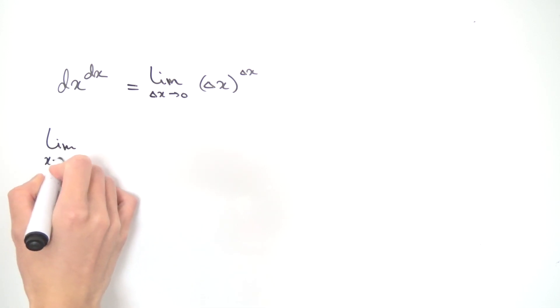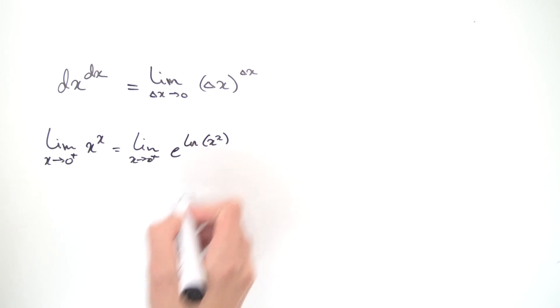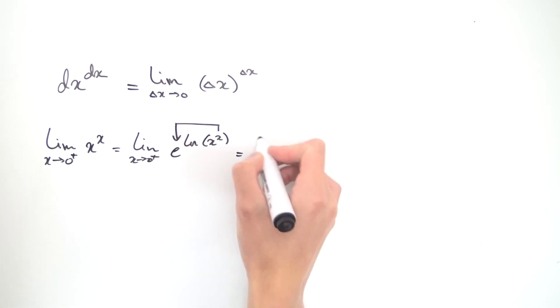So this is the same as the limit as x approaches zero from the positive side of x raised to the x power. And what can we do with this? We can rewrite this as the limit as x approaches zero plus of e to the natural log of x to the x. And the nice thing with doing this is we can bring this x at the top down to the front of the natural log. So this simplifies to the limit as x approaches zero plus of e to the x natural log of x.